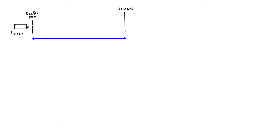We can also demonstrate two-source interference using visible light, with a laser and a double slit. For light, the slits need to be really narrow to cause diffraction - typically a slit separation of about a quarter of a millimetre. We give this separation the symbol S. The laser light is diffracted as it passes through each slit and falls onto a screen, with the slit-to-screen distance D needing to be large, around one and a half to ten metres, to get a clear two-source pattern.